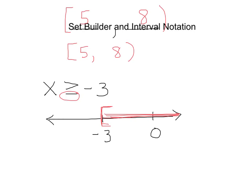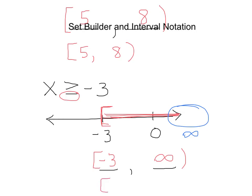The interval notation has a where-does-it-start, comma, where-does-it-end format. We can take care of where it starts: a bracket and negative 3. But where does it end? It doesn't end — it keeps going in this direction. The symbol we use to describe this behavior is infinity, positive infinity. Because infinity is describing behavior rather than a specific number, we close that with a parenthesis. So to describe all numbers greater than or equal to negative 3 in interval notation, we have a bracket, negative 3, comma, infinity, parenthesis.